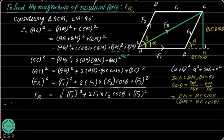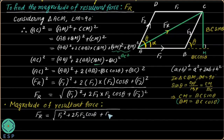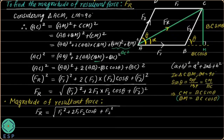So we got the magnitude of resultant force. The magnitude of resultant force is FR = √(F1² + 2·F1·F2·cos θ + F2²). Now we would like to find the angle alpha, which is the direction of the resultant force.